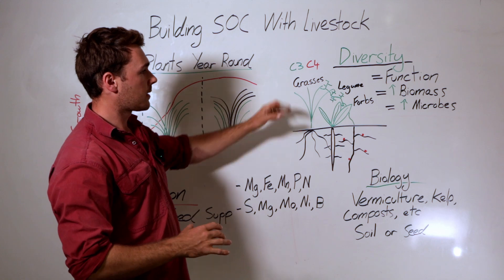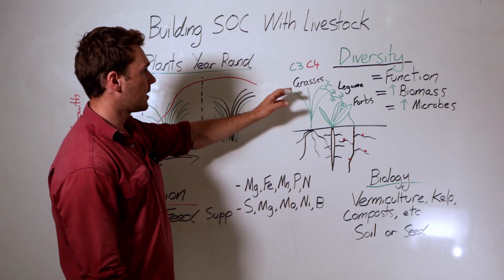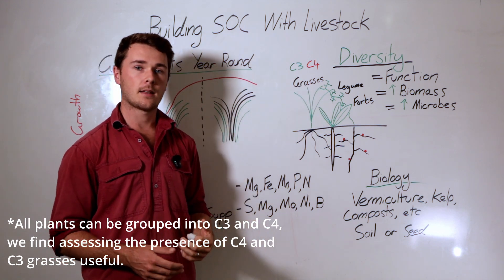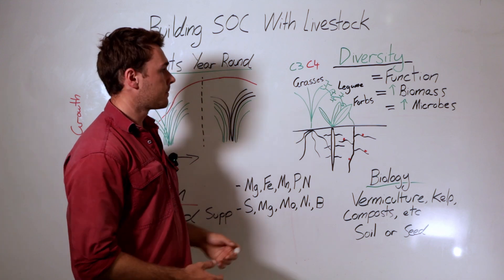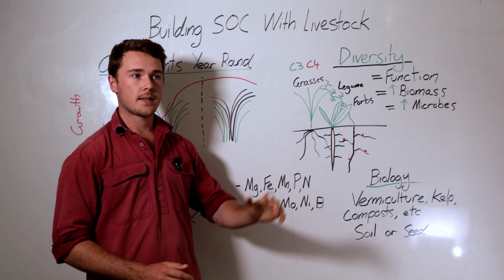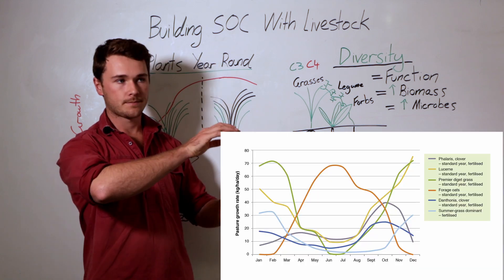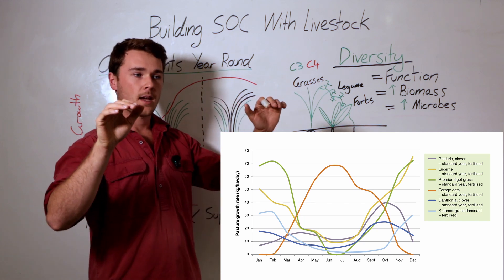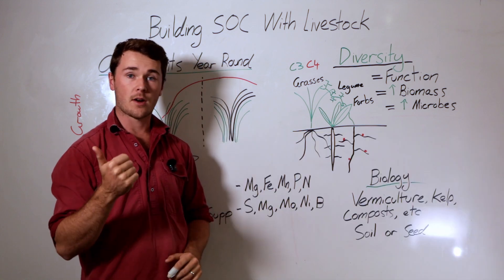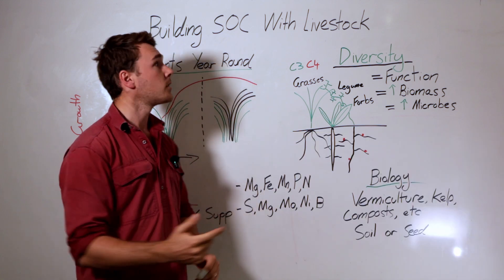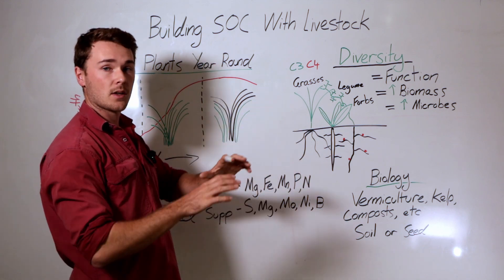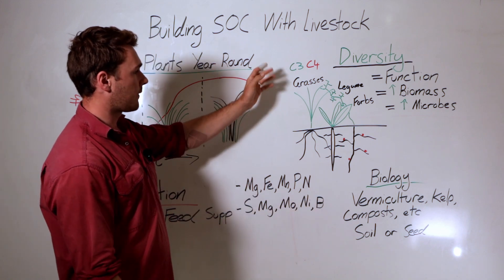Grasses can be split into C3 and C4. C4 grasses perform better in summer, while C3 grasses go better in winter or cooler areas — this is quite important for maintaining green leaf all year round. As shown in this graph, C4s maximize production during summer and then we want C3s to carry that production through winter. This is important both for productivity and for increasing soil organic carbon because photosynthesis is occurring all year round.